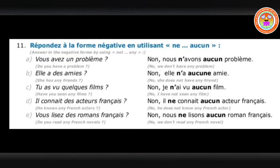Then: Vous lisez des romans français — you read some French novels. No — Nous ne lisons aucun roman français — we don't read any French novels. Ne...aucun accepts only gender, not number, so you have to be very careful. So we have finished the entire first lesson. I hope you have understood all the exercises. I want you to copy down everything in your classwork. See you, children. Bye.